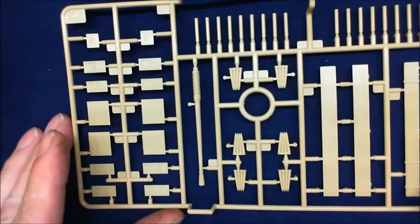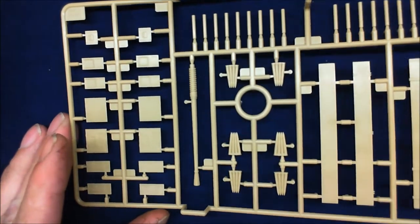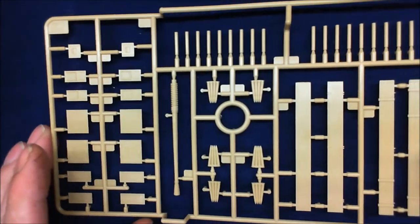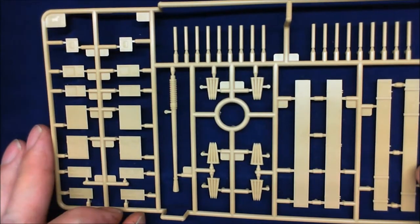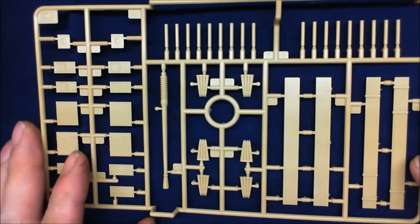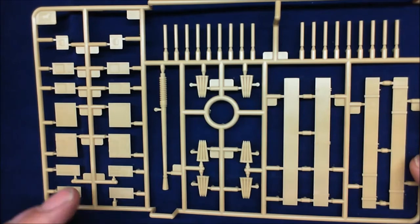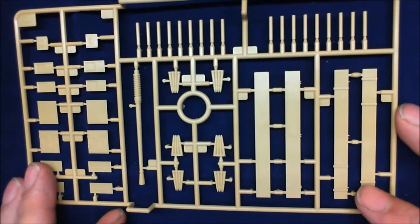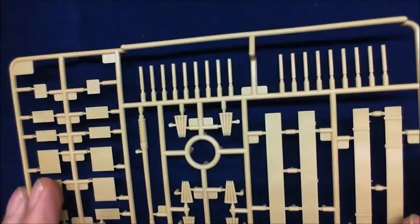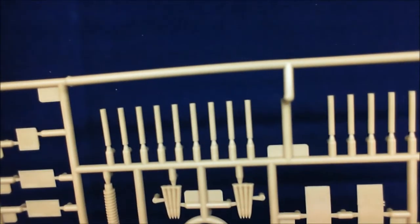Right, the first sprue. What we got on this one? Looks like ammunition boxes, barrel ammunition. This must be for the spare barrel box. And by the look of it, I think they might be empty shell cases. Yeah, we could be right there.